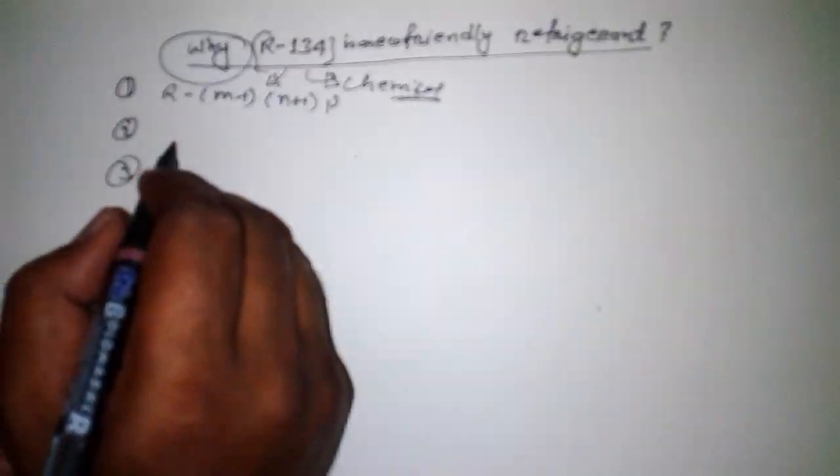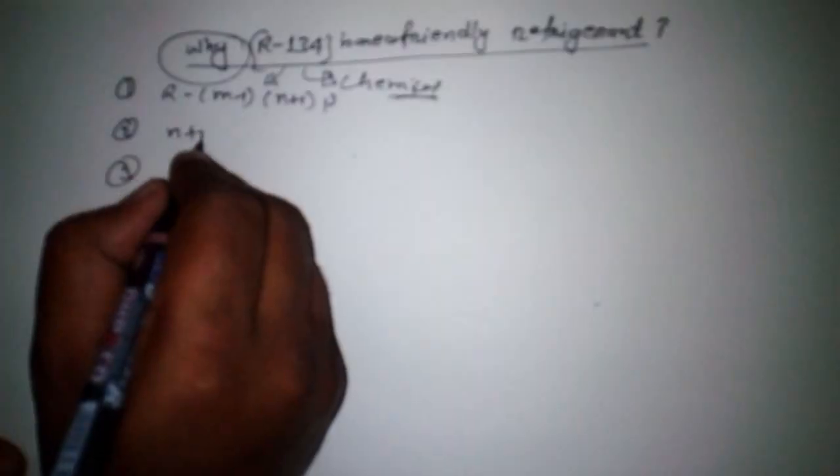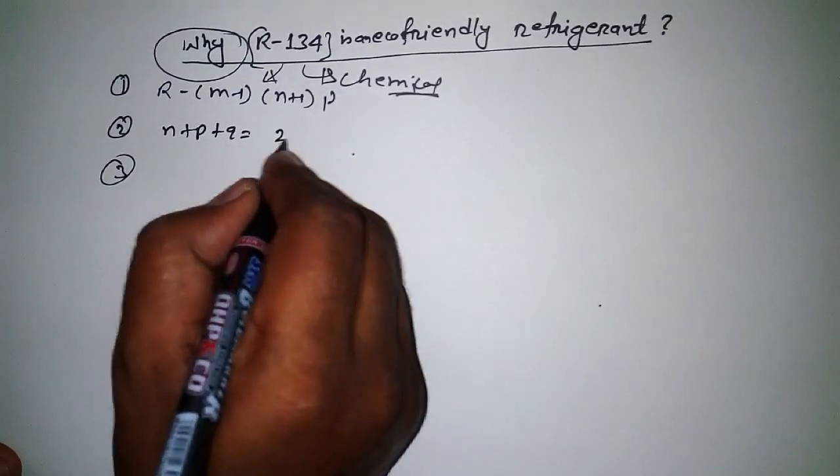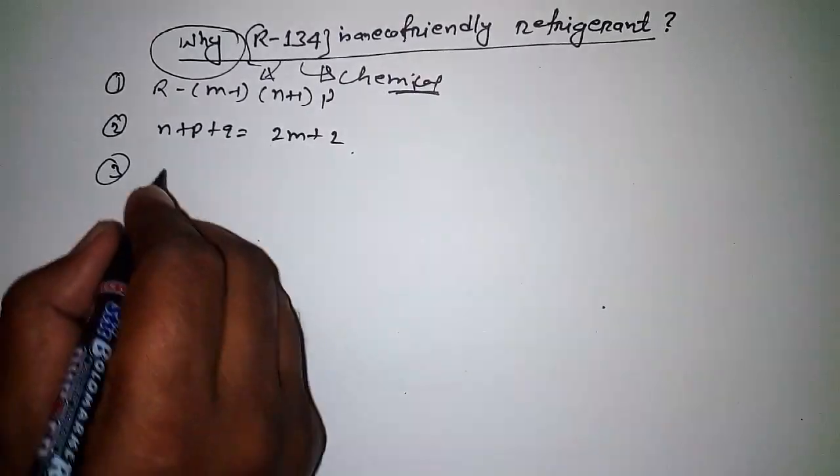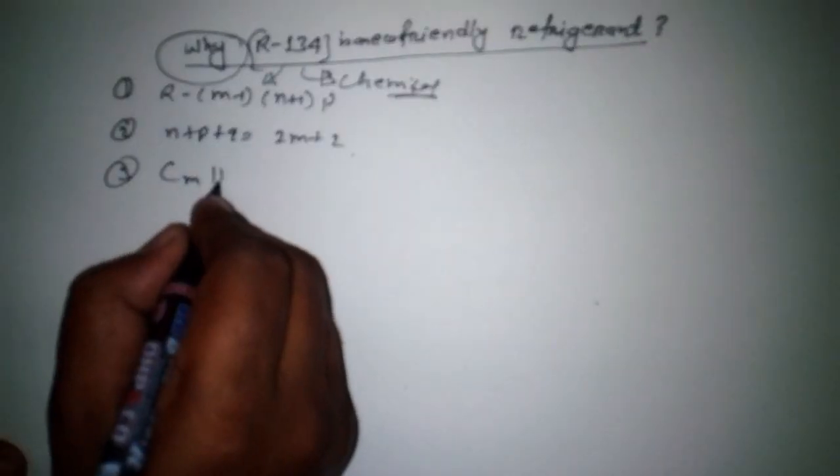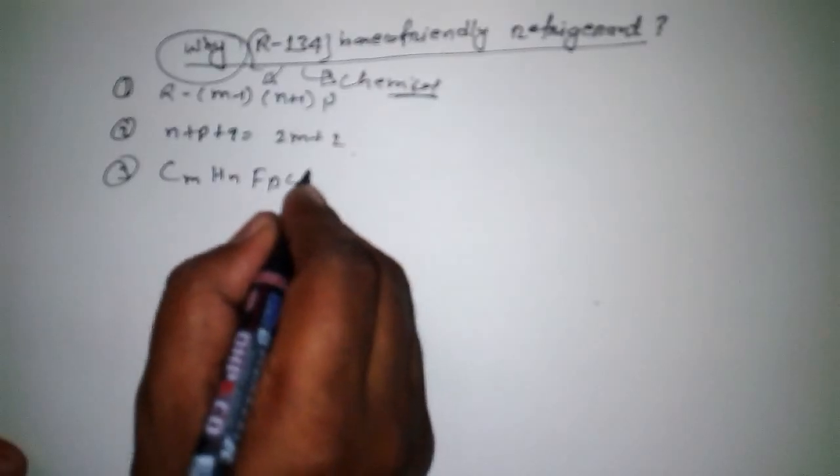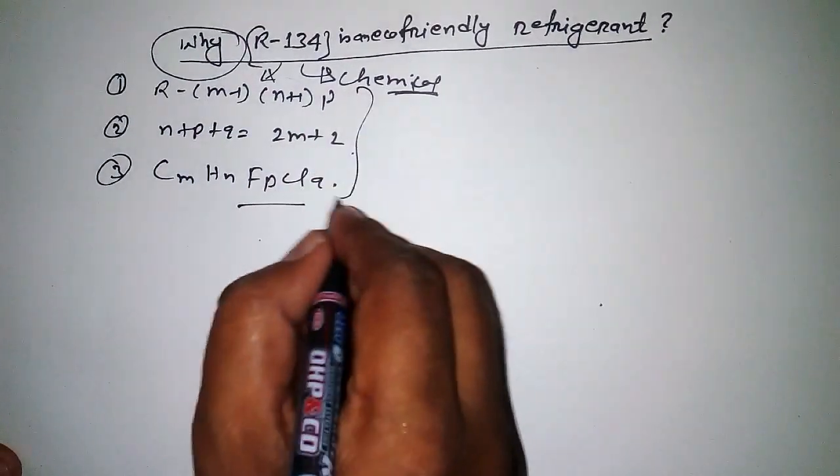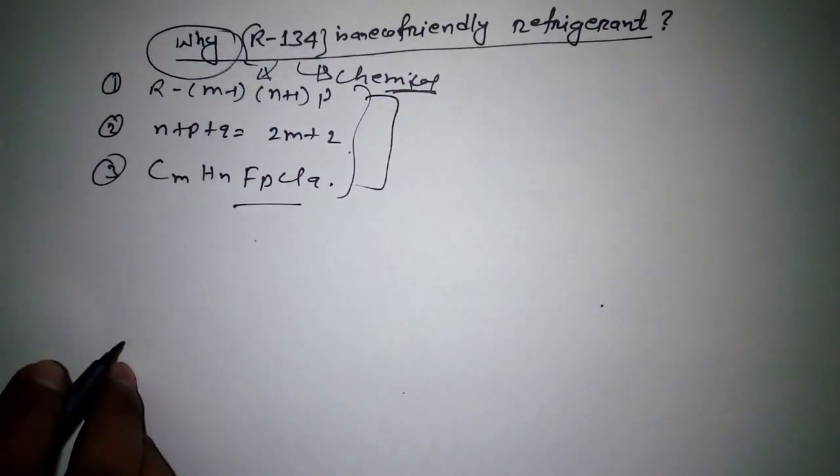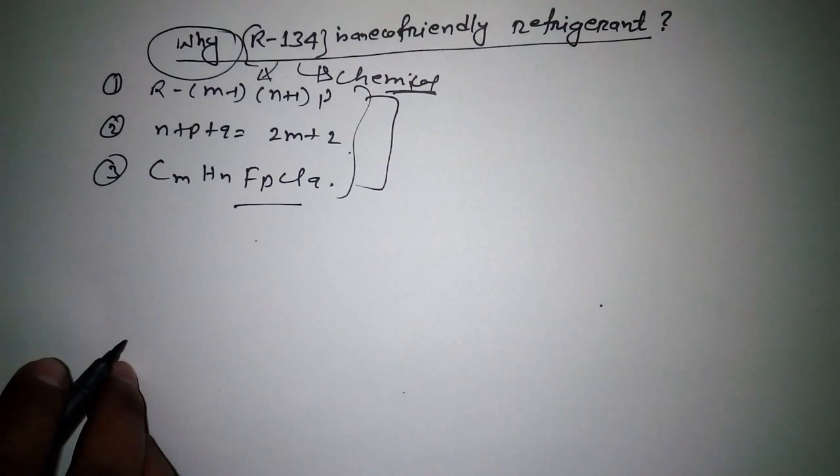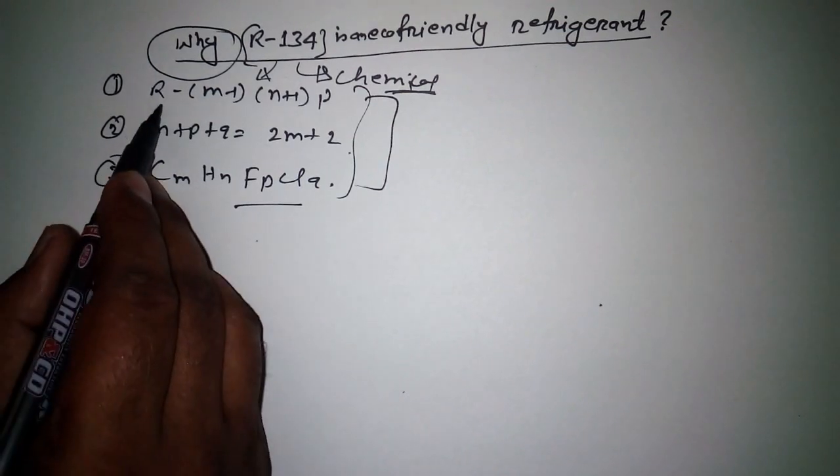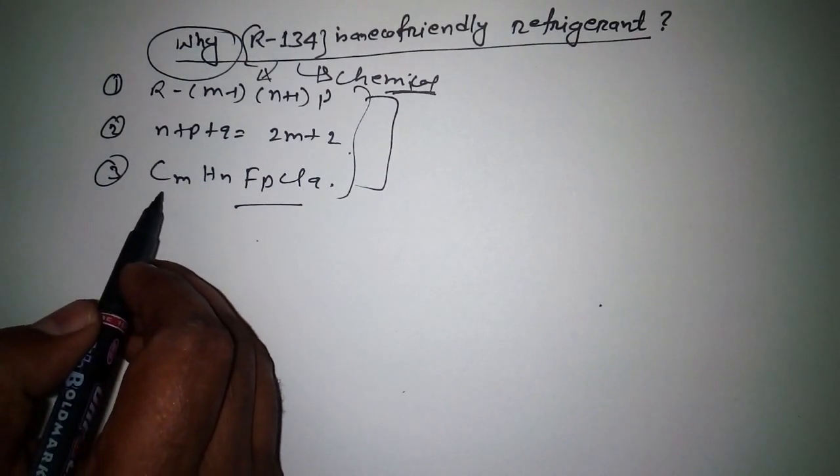We have the formula R(m-1)(n+1)p, then n plus p plus q equals 2m plus 2, then we have another formula CmHnFpClq. Basically all three are steps, a step-by-step method to find out its chemical name. First we use this one, then this one, then this one.